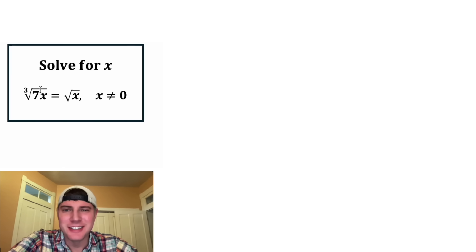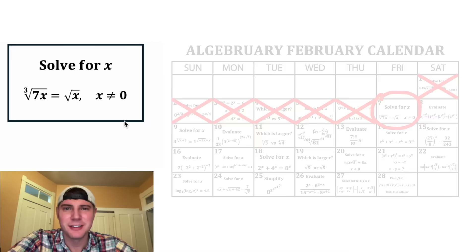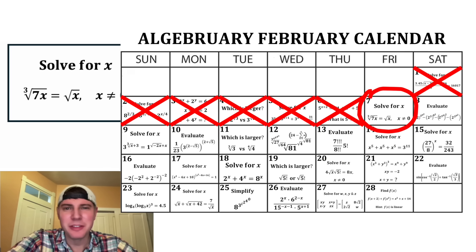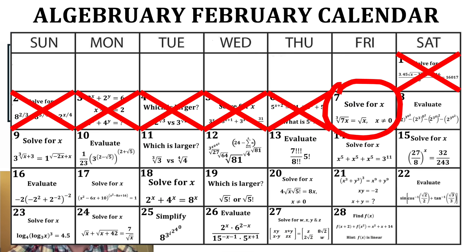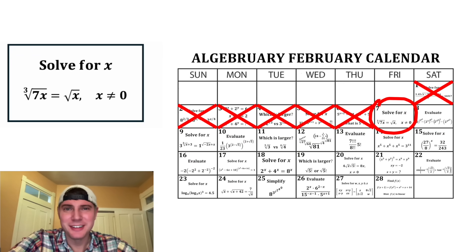Hey guys, this looks like a fun one. It says solve for x. We're given the cube root of the quantity 7x is equal to the square root of x, and x does not equal zero. This is day seven of our algebraic February calendar. For the month of February, we're gonna solve 28 algebraic problems. Looks like there's some pretty cool ones here.